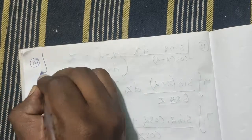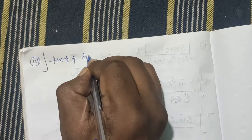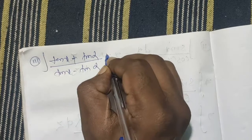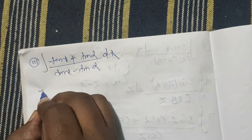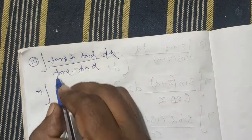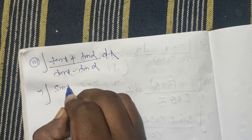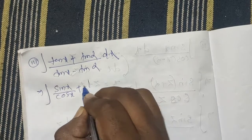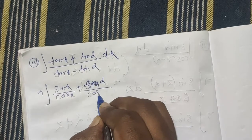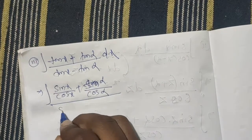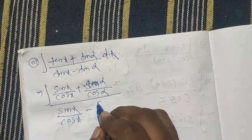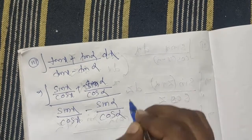Last question: the integral of (tan x plus tan alpha) divided by (tan x minus tan alpha) dx. We convert to sin/cos form: tan x is sin x by cos x, and tan alpha is sin alpha by cos alpha.